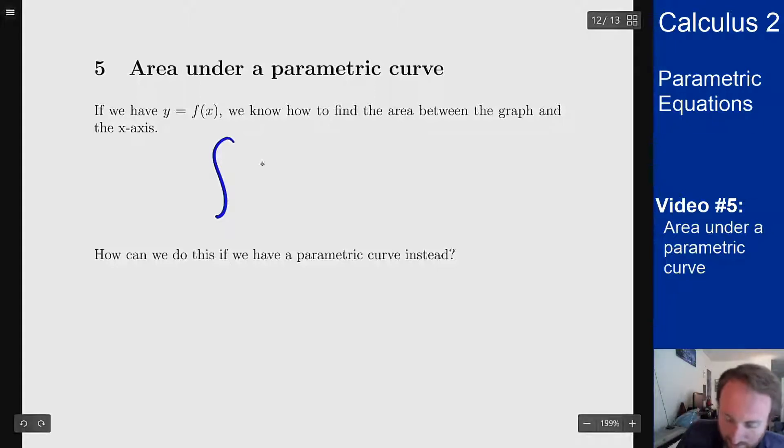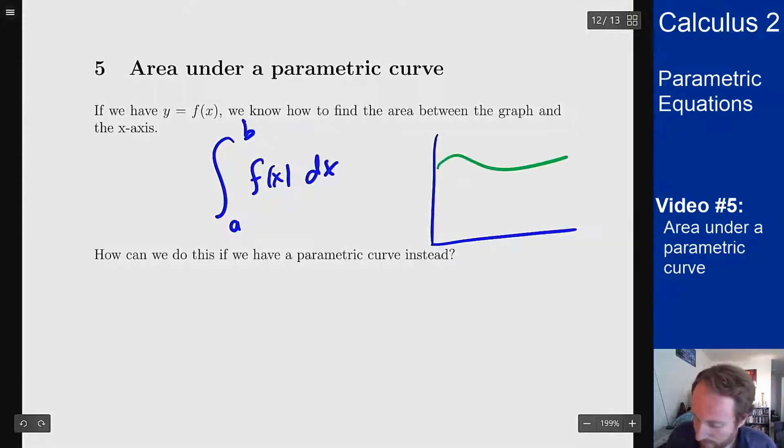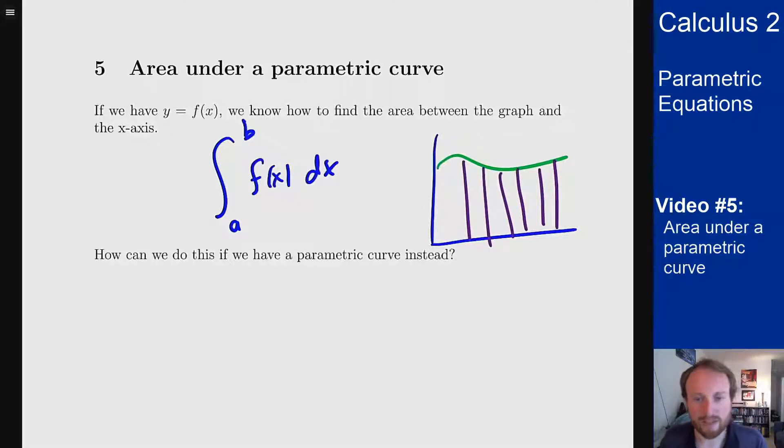Right, this is our standard integral of f of x dx, and it comes from taking this curve, breaking it up into little pieces, and adding up all these little rectangles. Taking a limit to get a Riemann sum to get to an actual integral. What happens if instead I have a parametric curve? Can I still do the same thing?